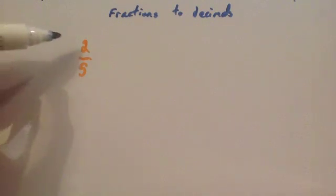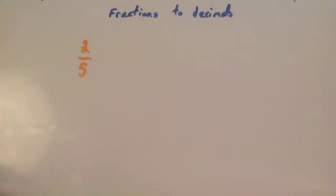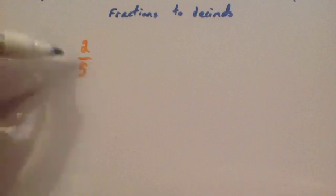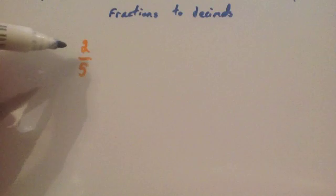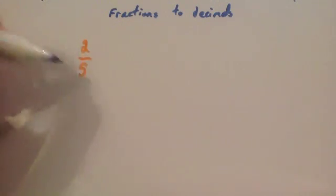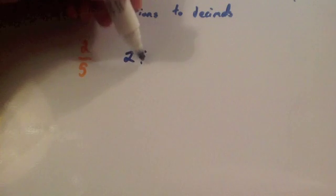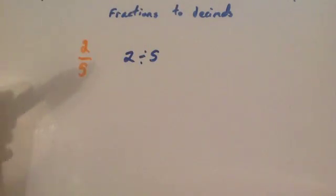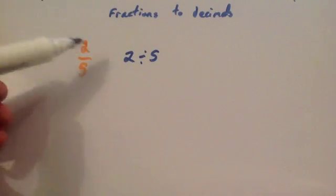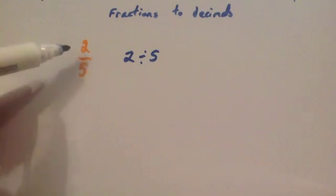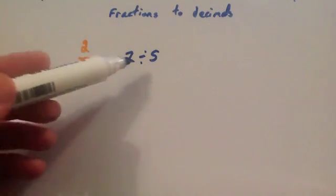Okay, so if you had a fraction, for instance, 2 fifths, the method that I would use whenever I'm dealing with fractions is considering that this line, this line here, means divide by. So you've got 2 divided by 5. Make sure you realize whenever it's a decimal number like this, that you're doing the top divided by the bottom, the numerator divided by the denominator.